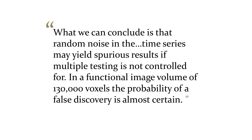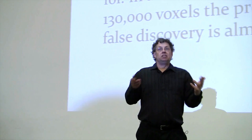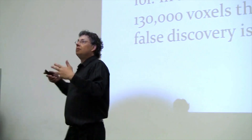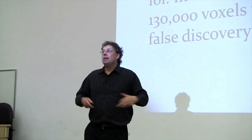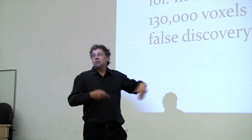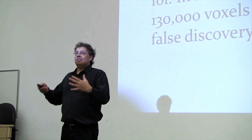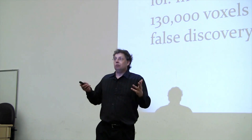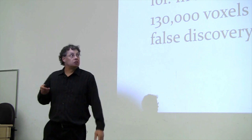What they conclude is that random noise in the time series may yield spurious results if multiple testing is not controlled for. In a functional image volume of 130,000 voxels — the little maybe-million-neuron regions of the brain — the probability of a false discovery is almost certain. You'll almost certainly find some parts that light up when it's not real. There are many technical statistics arguments written about this, but this one is the one everyone knows. It's a brilliant reductio — it's funny, it's memorable. And that is a beautiful example of how you refute something that's largely nonsense.